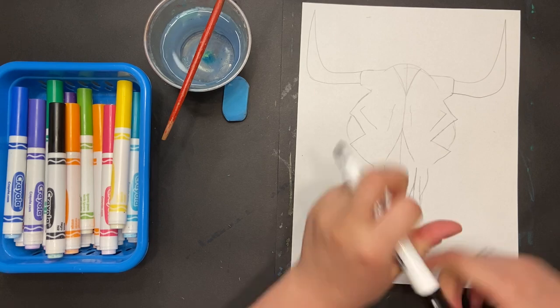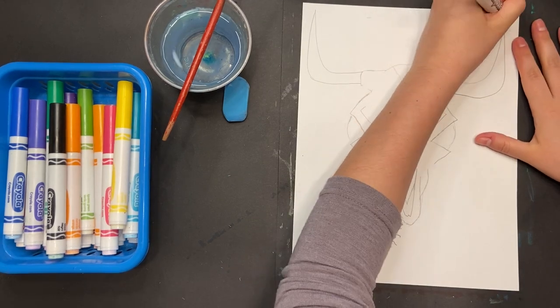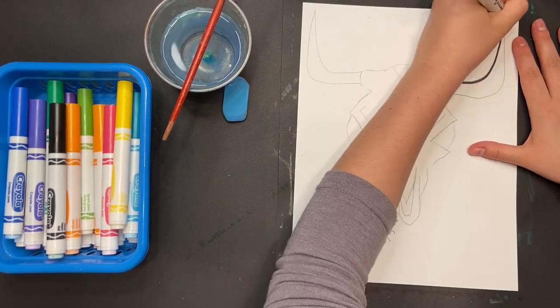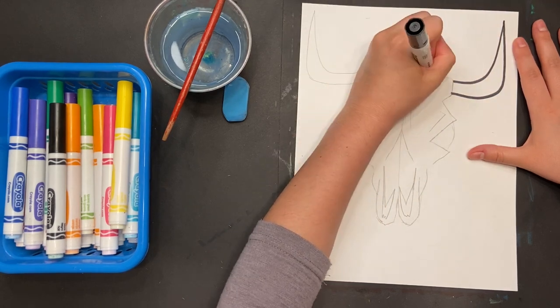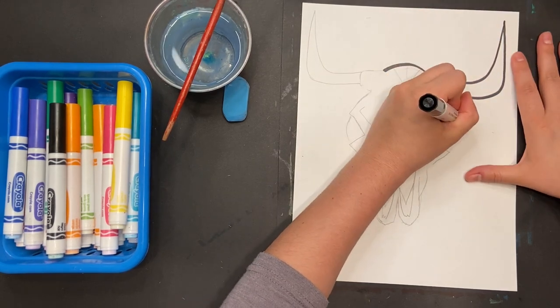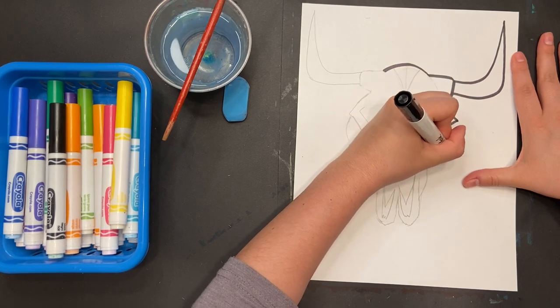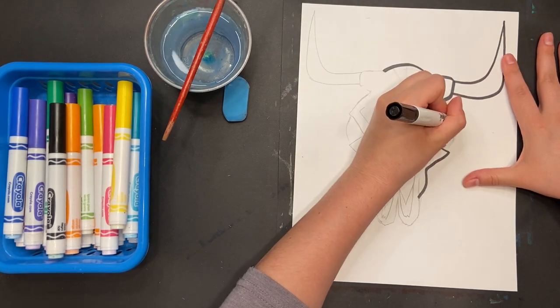Now, using a black marker, I'm going to begin to outline everything I've drawn so far. You'll also see me color certain areas in. So just be aware as you watch and see where I color in and where I just outline.